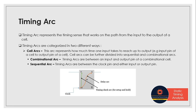Timing arcs can be further divided into two categories: cell arcs and net arcs. Cell arcs means this arc is between an input and output pin of a cell — that is, the source pin is the input pin of a cell and the sink pin is the output pin of the same cell.